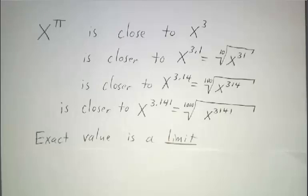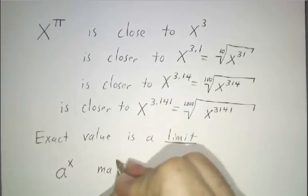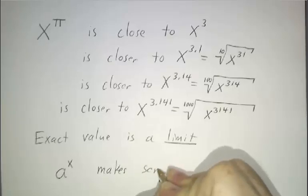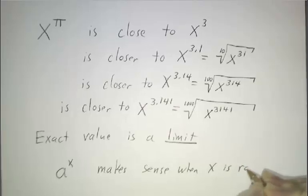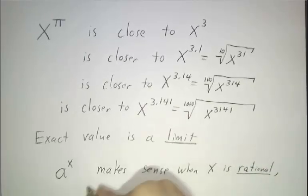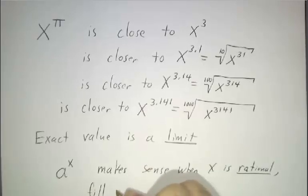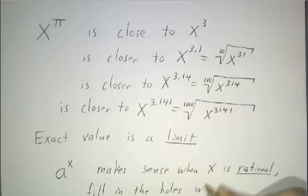But for now, we're going to hand wave it. We're just going to say, if you want to understand the function a to the x, then that makes sense when x is a rational number. And then fill in the holes when x is irrational.